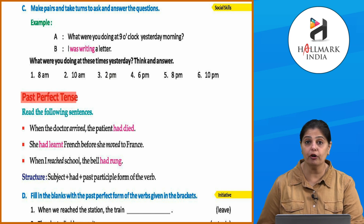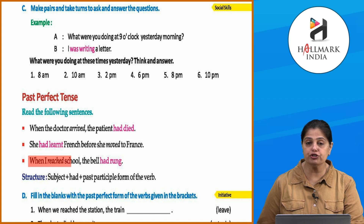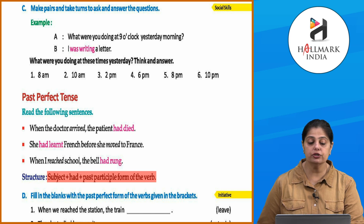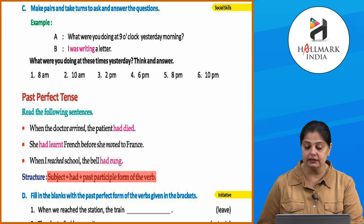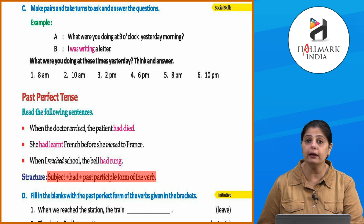Now let's look at the past perfect tense. Read the following sentences: 'When the doctor arrived, the patient had died.' 'She had learnt French before she moved to France.' 'When I reached school, the bell had rung.' The structure is: subject plus 'had' plus past participle form of the verb. So the patient had already died; she had already learnt French before moving; the bell had already rung before I reached school.